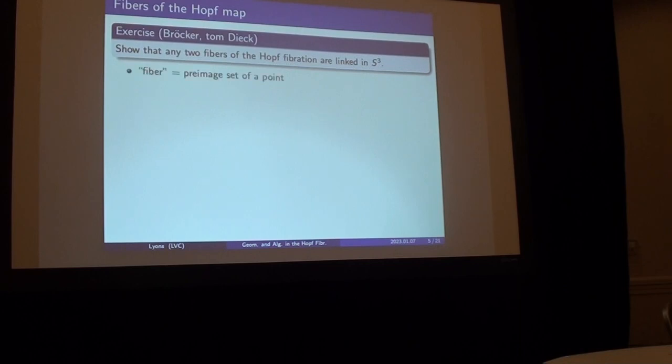A fiber is just a mapping word for the preimage of a point. So from the three-sphere, we have a mapping to the two-sphere. Choose any point on the two-sphere. Look back at all the points that map to it. Those are points in four-space. Now what does it mean to call them a circle?